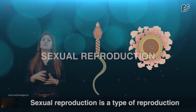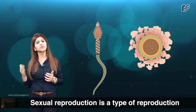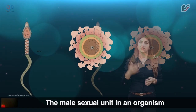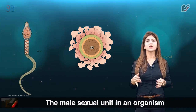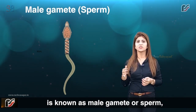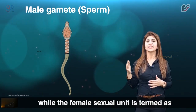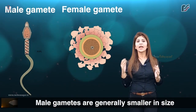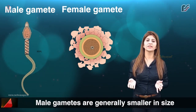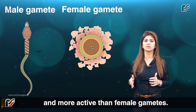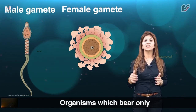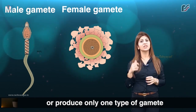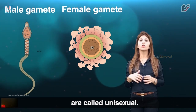Sexual reproduction is a type of reproduction in which two sexes — namely male and female — are involved. The male sexual unit in an organism is known as the male gamete or sperm, while the female sexual unit is termed the female gamete or ovum (egg). Male gametes are generally smaller in size and more active than female gametes. Organisms which bear only one reproductive organ, either male or female, or produce only one type of gamete, are called unisexual.